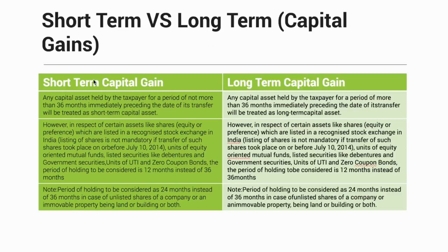To understand the differences between short-term and long-term capital gains, I have taken these differences from the official website of the Income Tax Department of India. Generally, any asset that is sold before 36 months will be treated as a short-term capital gain, but there are some exceptions.